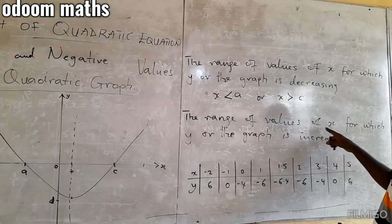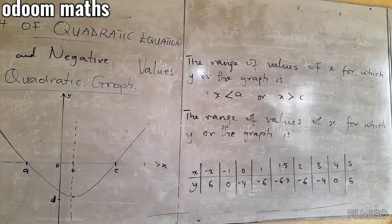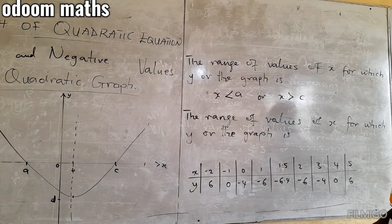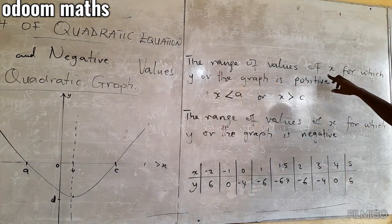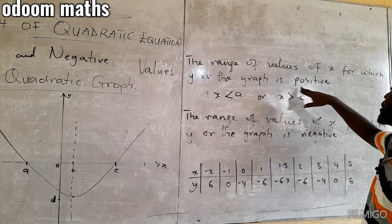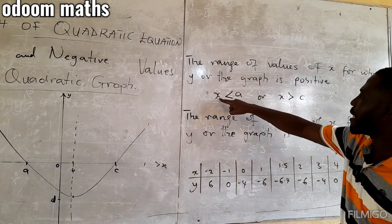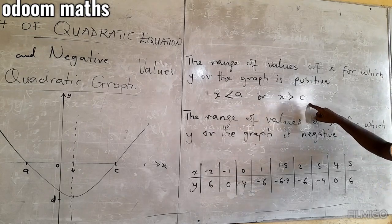Now, the range of values of x for which y is positive is x less than a or x greater than c.